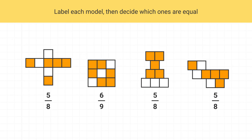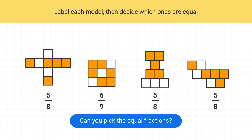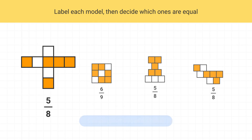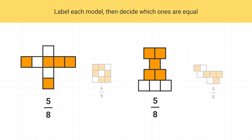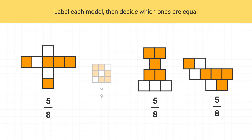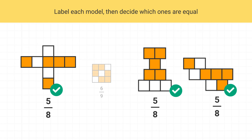Now we've gone through and labeled all of these fractions. Can you pick out the ones that are equal? Well, we can see this model, this one, and this one are all five-eighths. So even though they might look different, these three fractions are all equal to each other.